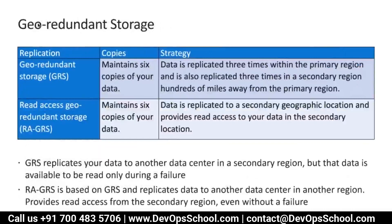In geo-redundant service, rather than local or zone which maintains three copies, geo-redundant and read-access geo-redundant maintain six copies — three copies in every region. Data is replicated three copies in the primary region and three copies in the secondary region, which can be hundreds of miles away. Data will be replicated using the backbone network, but there will be latency.